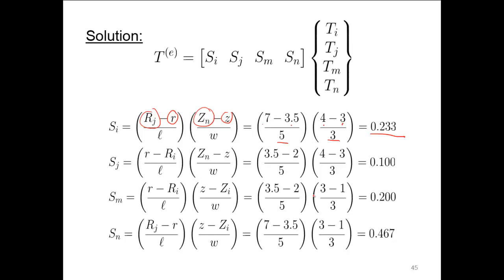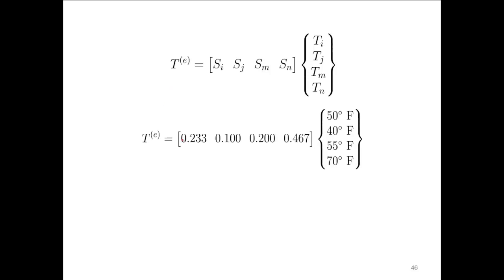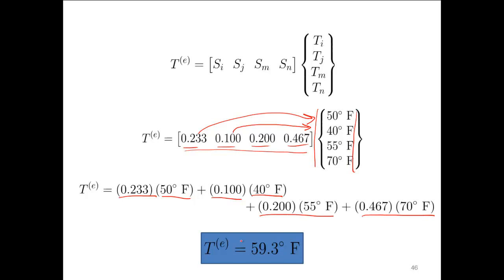Plugging the shape function values back in, with the known nodal temperatures from the problem statement, we perform the matrix multiplication: T = 0.233·T_i + 0.1·T_j + ... for all four nodes. Computing 0.233 × 50 + 0.1 × 40 plus the remaining terms and adding them up, we get a temperature of 59.3°F at that particular location within the element. Hopefully that's straightforward — it's the same process we used with the one-dimensional case, just extended to two dimensions.